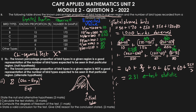The next question asks for the degrees of freedom. We have 6 different bird type categories, so the degrees of freedom equals 6 minus 1, which gives us 5 degrees of freedom for this test.